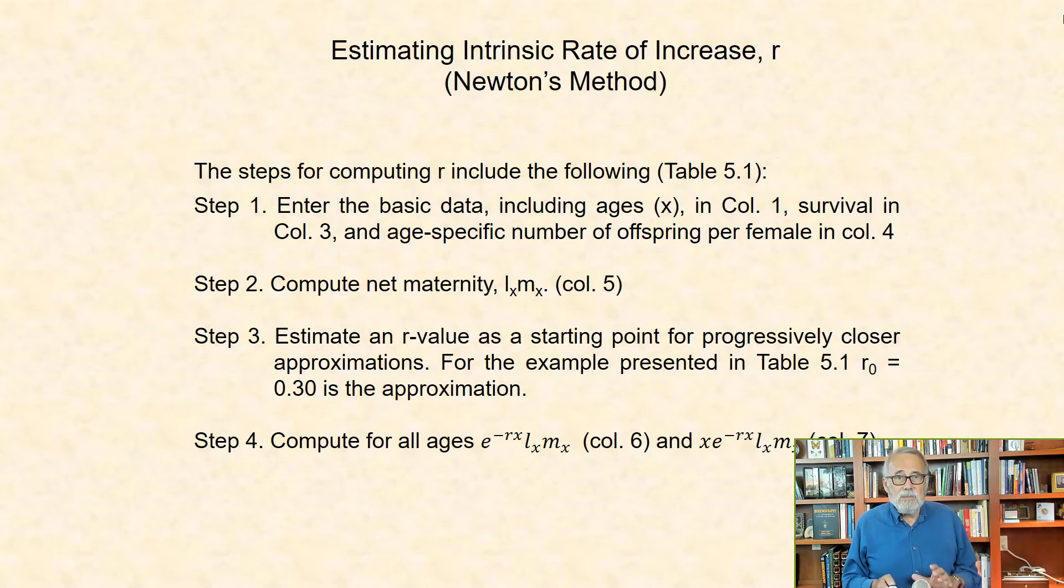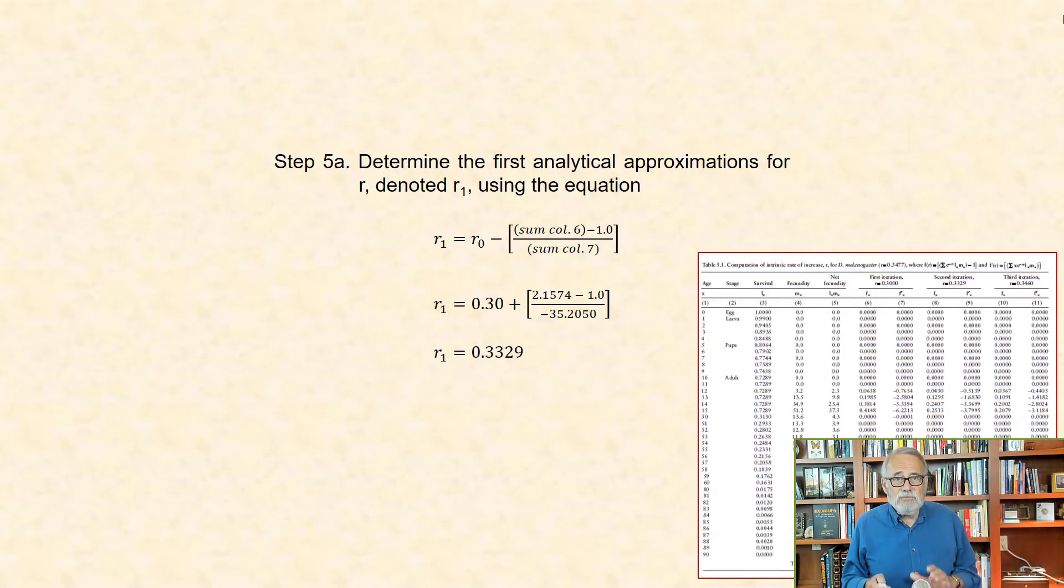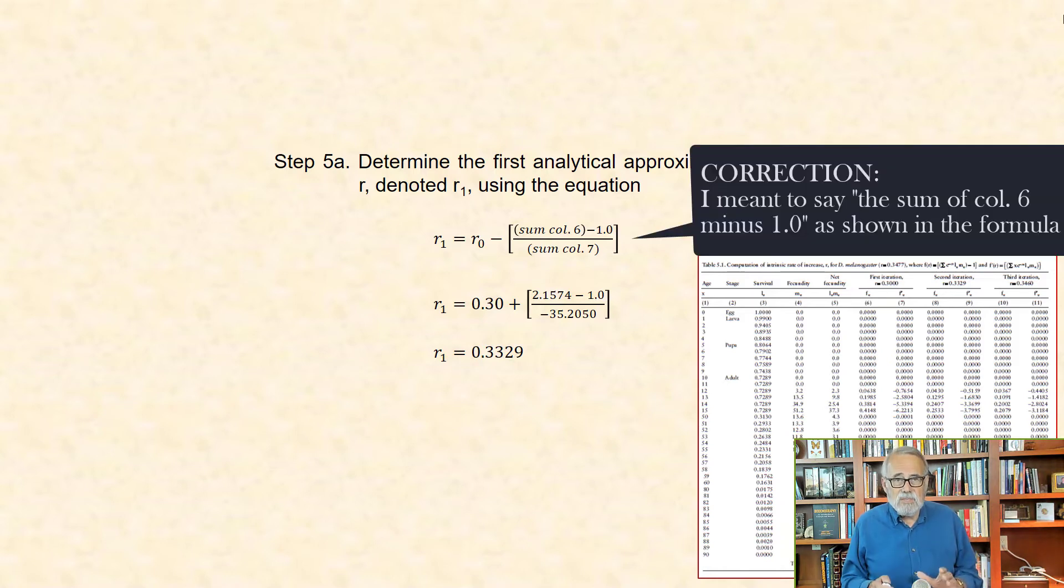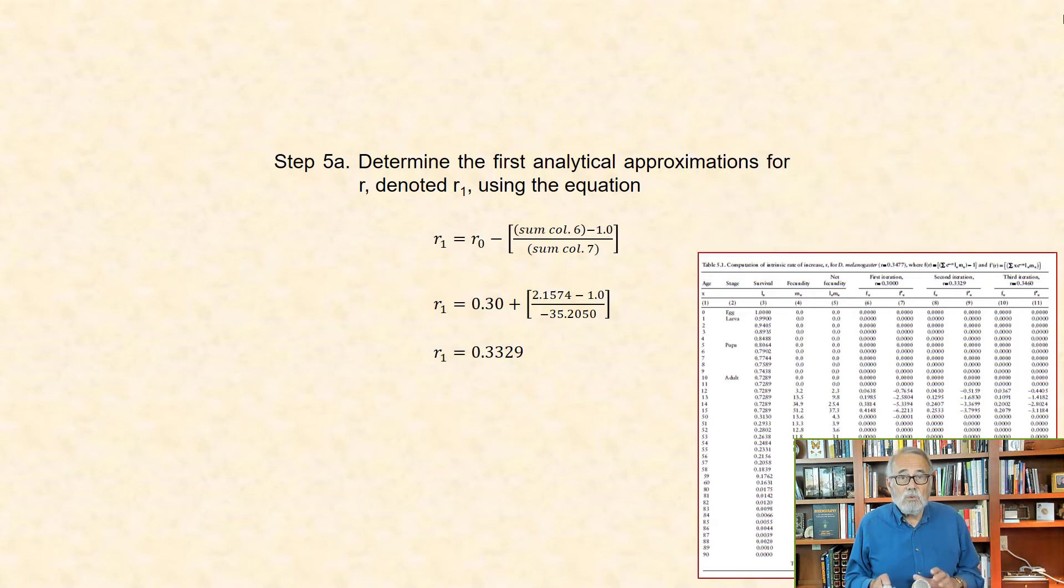That is, Step 5a: Determine the first analytical approximation for r, denoted r1. That's the first iteration. Using the equation shown here in which the value of 1 minus the sum of column 6 divided by the sum of column 7 is subtracted from r0 to yield r1 equal 0.3329.